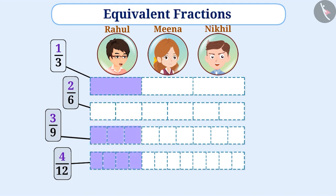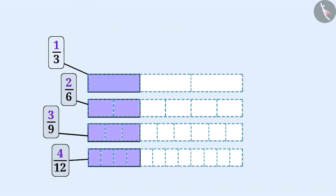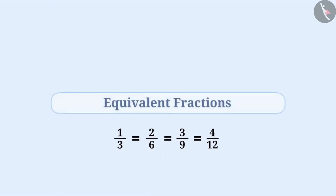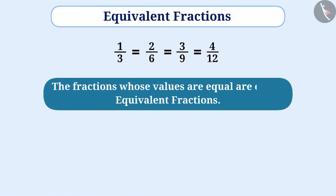We can understand that these fractions have equal size. That means all these fractions represent equal parts of a whole. Therefore, the value of fractions 1 by 3, 2 by 6, 3 by 9 and 4 by 12 are equal. The fractions whose values are equal are called equivalent fractions.